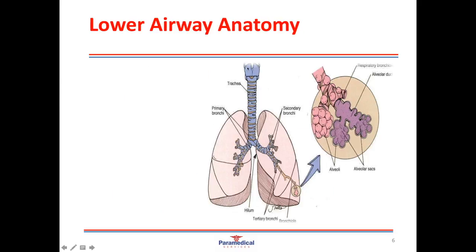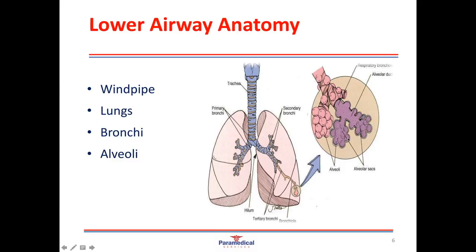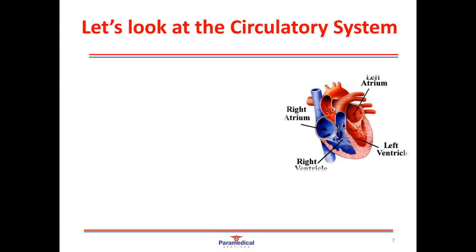The lower airway is comprised of the windpipe, the two lungs (left and right), and the bronchi, which are the branches of the windpipe that extend into the lungs. As these branches get smaller they lead to tiny air sacs called alveoli at the base of the lungs, where oxygen passes into the bloodstream and carbon dioxide is removed from the bloodstream to be breathed out.